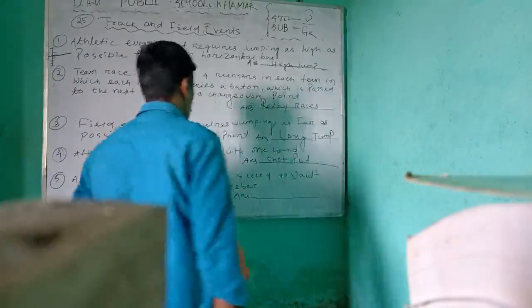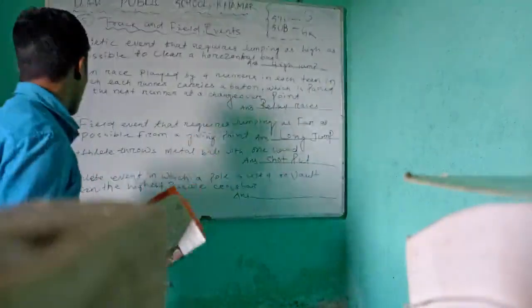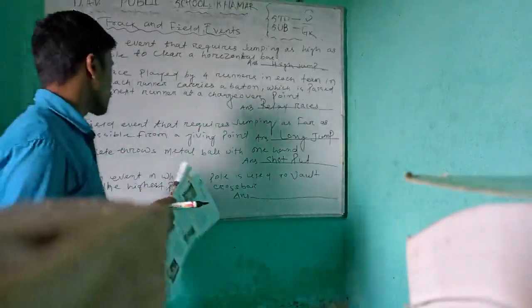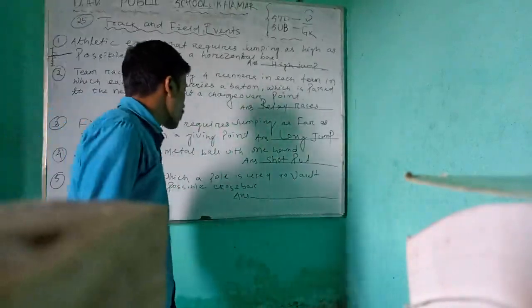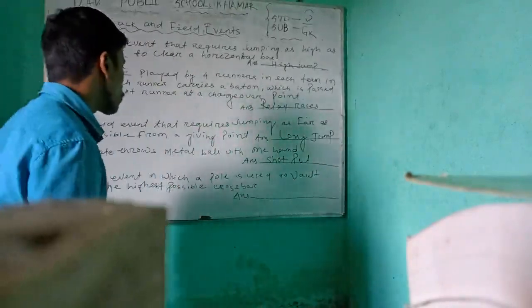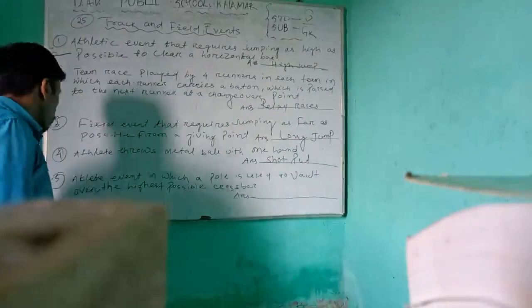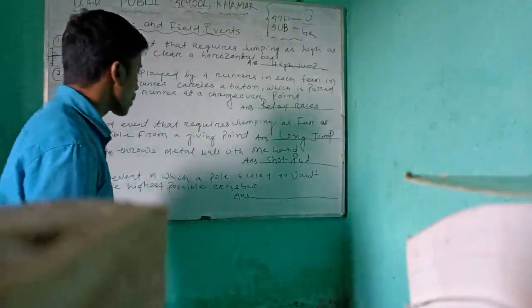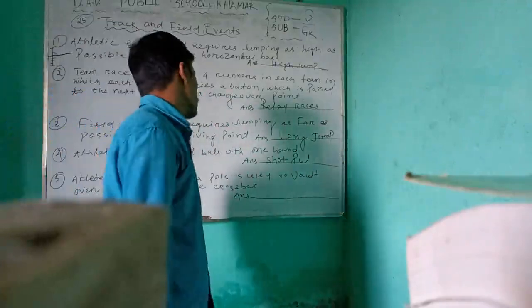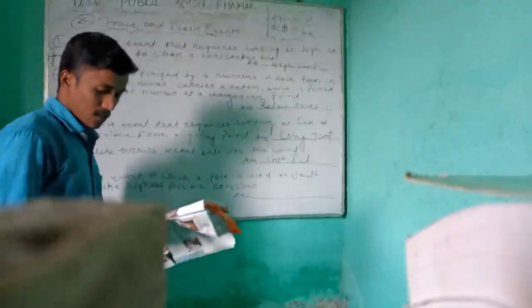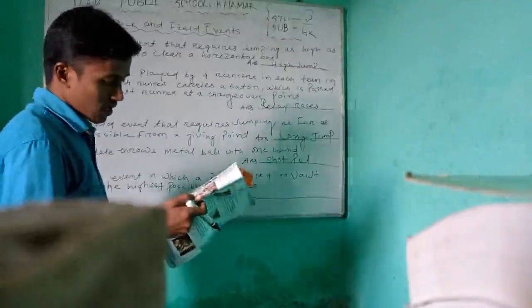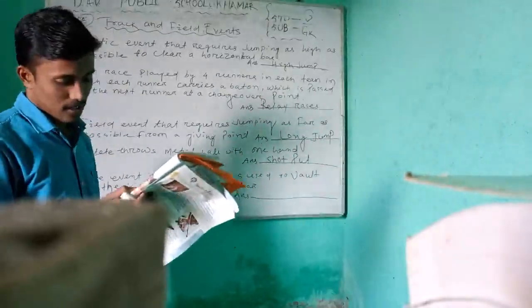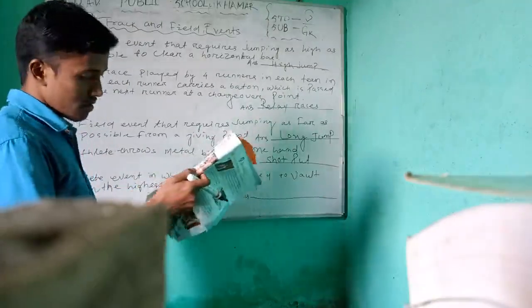The fifth question: an athletic event in which a pole is used to bend and reach as high a crossbar as possible — this is called pole vault.